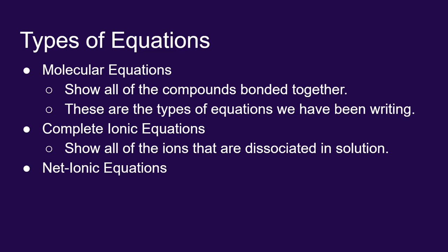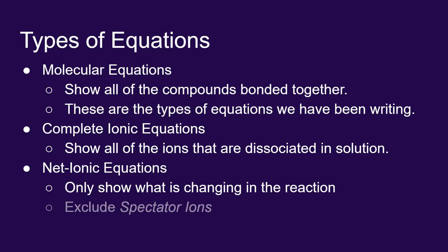I also want to write some net ionic equations. These net ionic equations don't show all the ions. They just show those that are changing in the reaction. Net ionic equations exclude something called spectator ions. I'll show you what that means when we get into the examples.